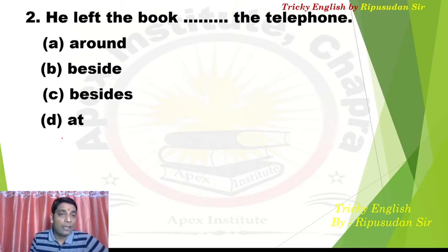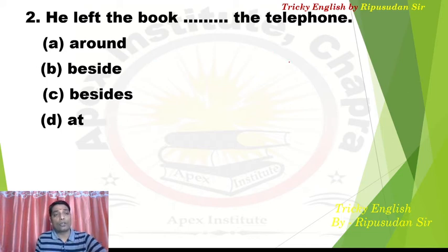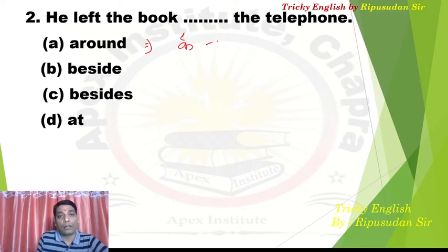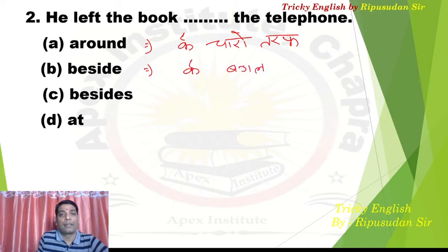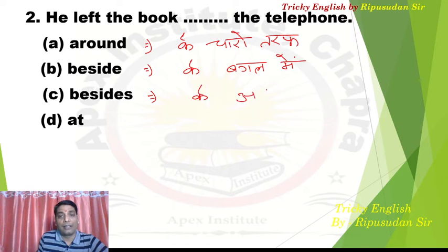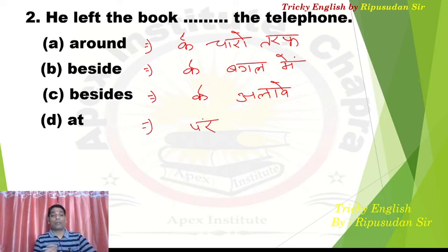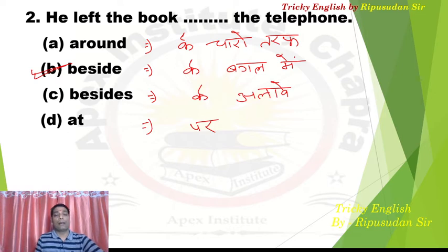Now move to the next — Question 2: 'He left the book dash the telephone.' He left the book in the dash of the telephone. Option A is 'around', meaning all around. Option B is 'beside', meaning next to. 'Besides' means in addition to or apart from. 'At' means at/near. The most suitable answer is 'beside the telephone' — he left the book beside the telephone.